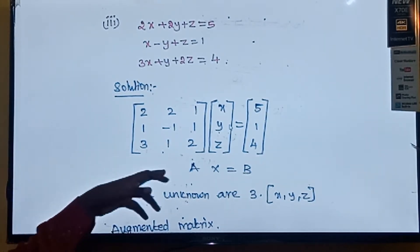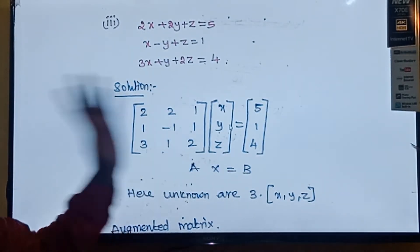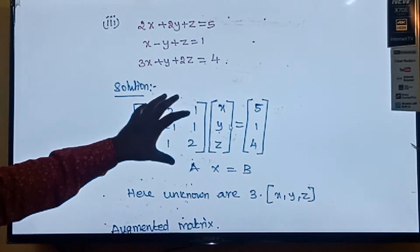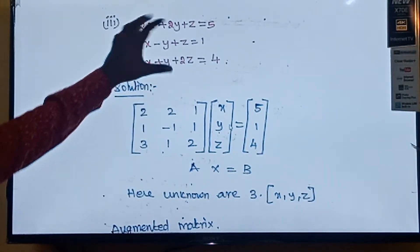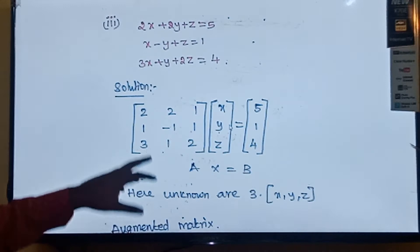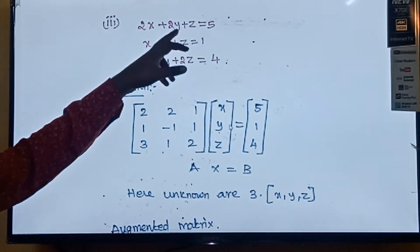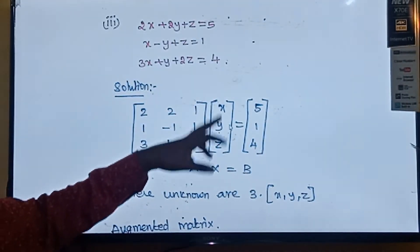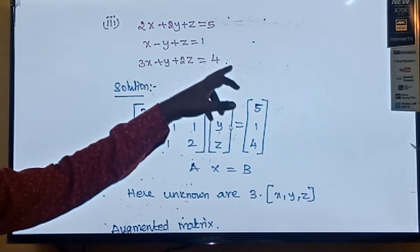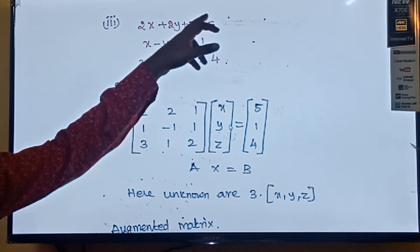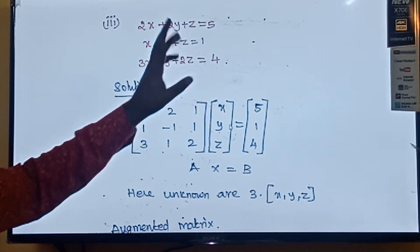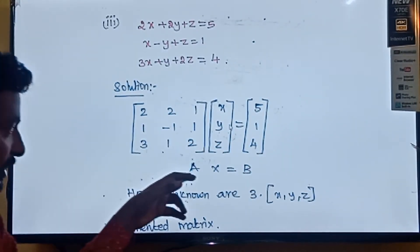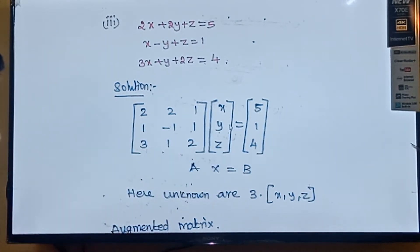I have written this in the form of Ax equal to b. The A matrix is nothing but the coefficients of x, y, z. The x matrix contains the unknowns x, y, z. And the B matrix contains the constants of the linear equations: 5, 1, 4. So this is in the form of Ax equal to b, with 3 unknowns x, y, z.